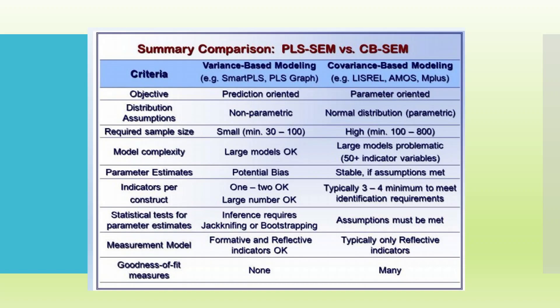The difference between variance-based modeling and covariance-based modeling—there is a difference between Smart PLS and AMOS. The objective in Smart PLS is more prediction-oriented. In case of AMOS, it is more parameter-oriented. The distribution in case of Smart PLS is you can have non-parametric data, but it is quite necessary in AMOS that the data is normally distributed. Smart PLS can work very well on small sample size, minimum 30 to 200. AMOS, Lisrel, or Mplus require large sample size, 100 to 800.